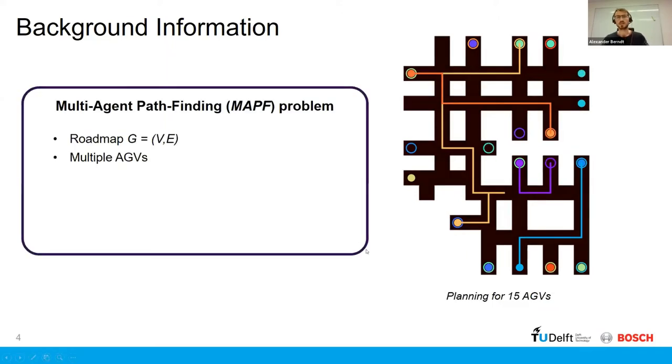And in the theory, this problem is typically formulated as the multi-agent pathfinding problem, or MAPF for short. And we consider a roadmap, which is just a graph, multiple AGVs, and the objective is to plan the routing, avoid collisions, and then minimize some cost functions, such as the make-span or the cumulative route completion times.